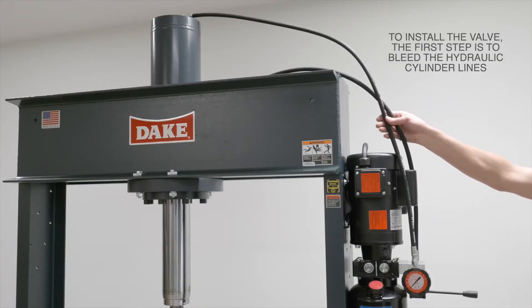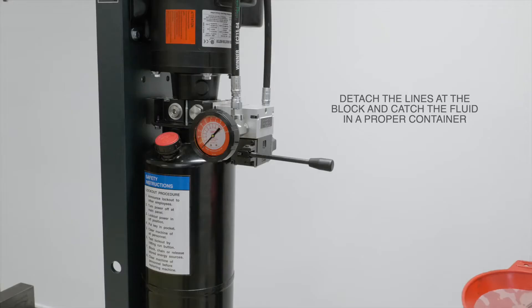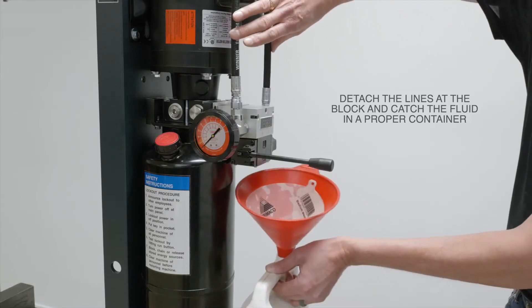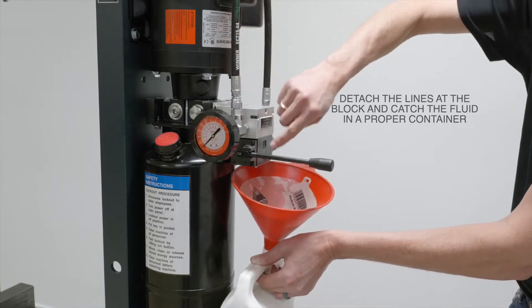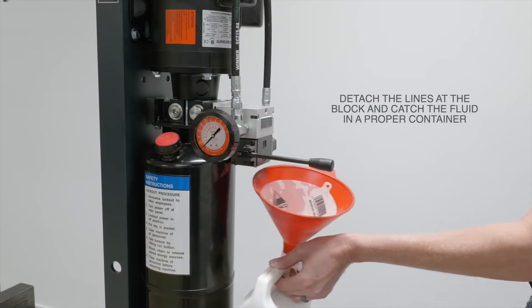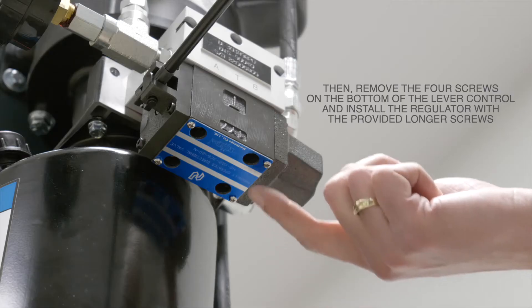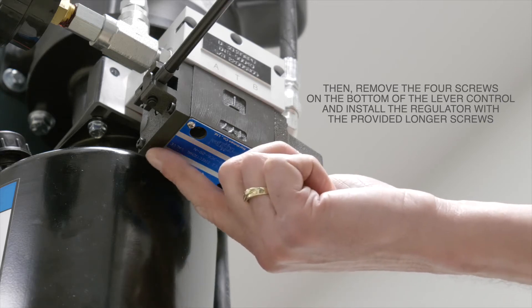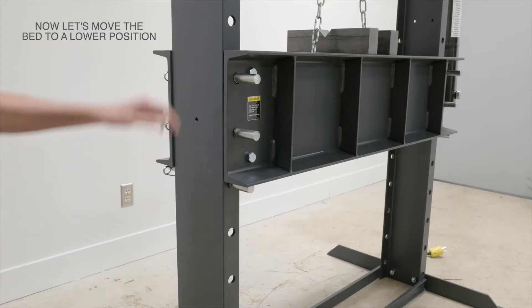To install the valve, the first step is to bleed the hydraulic cylinder lines. Detach the lines at the block and catch the fluid in a proper container. Then remove the four screws on the bottom of the lever control and install the regulator with the provided screws.